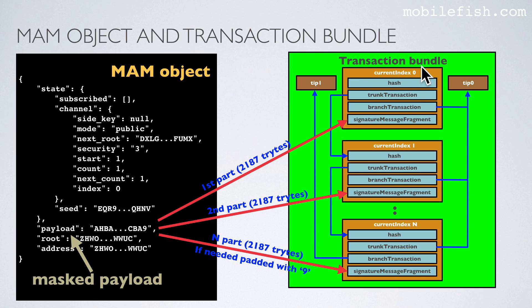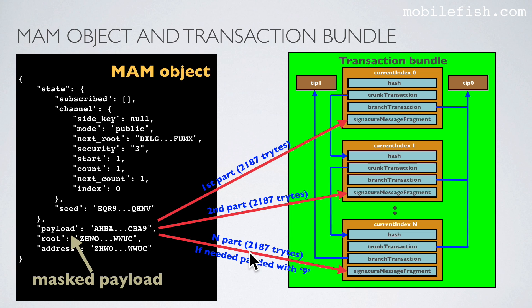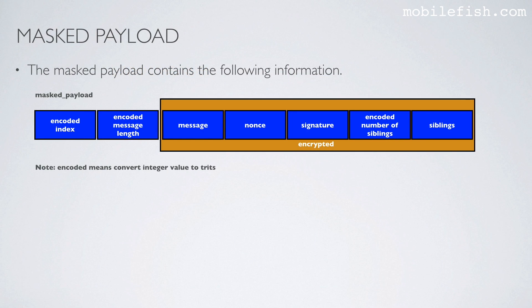In IOTA tutorial 19 I have already discussed the mem object. This is a transaction bundle with transaction objects. This is the payload, but a better name is mask payload. This mask payload is divided into several parts. Each part consists of 2,187 trites and is stored in the signature message fragment field. If needed, the last part is padded with nines to make its size 2,187 trites.